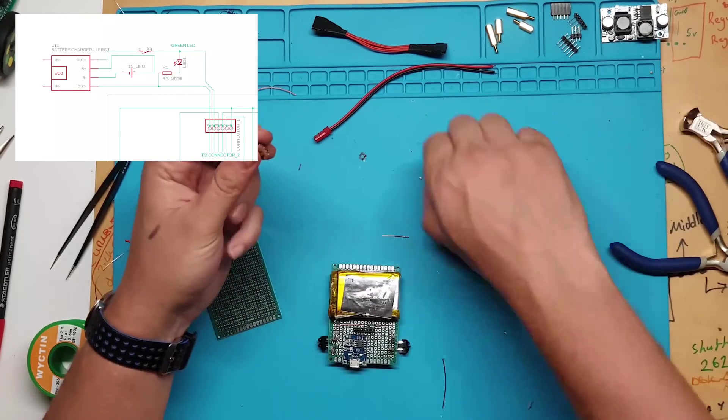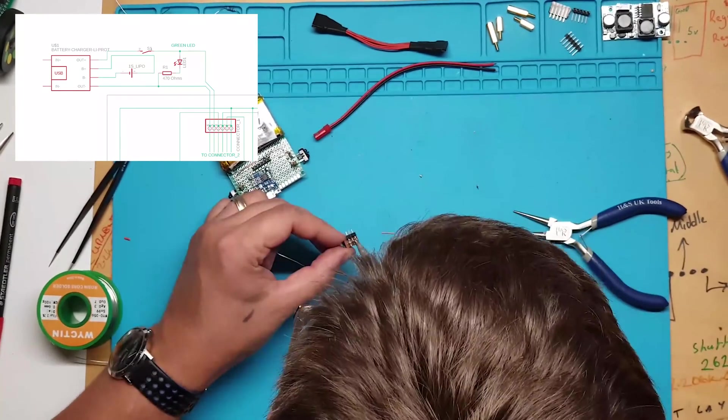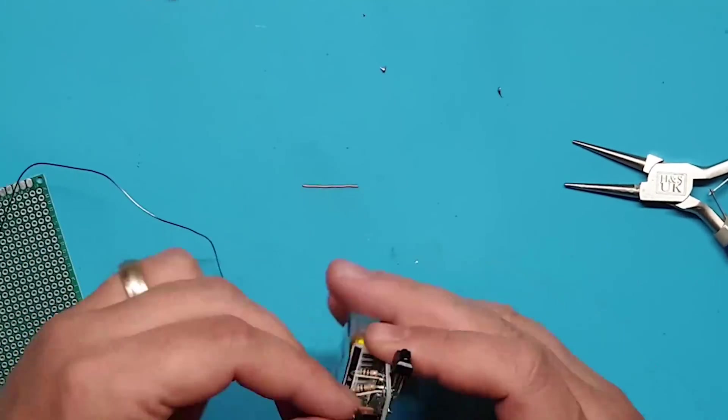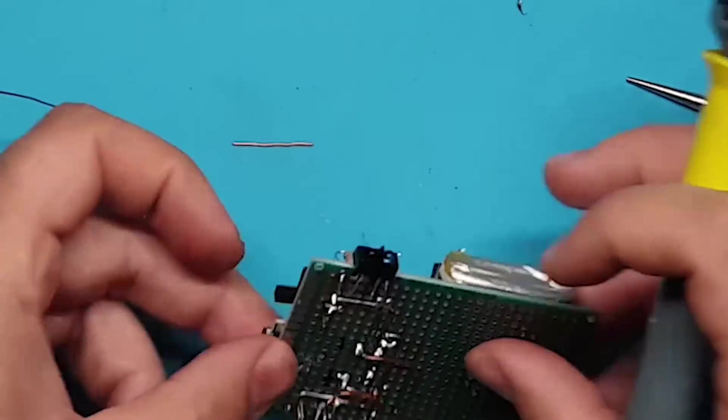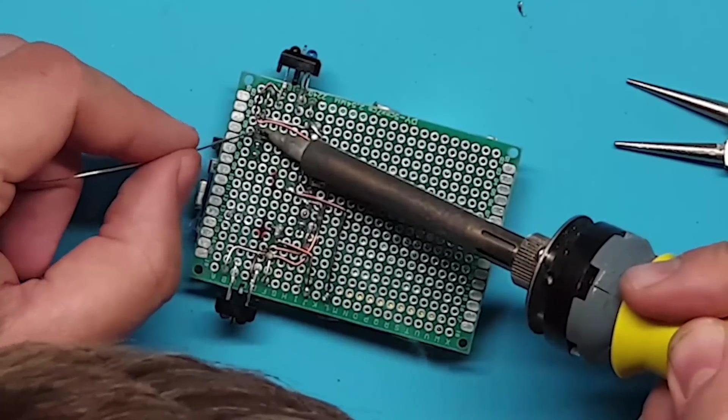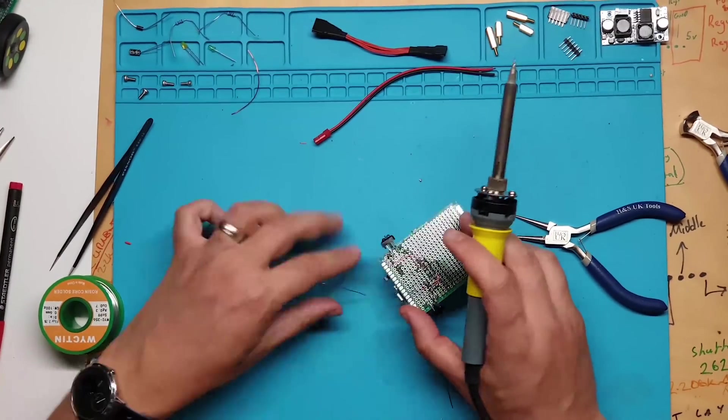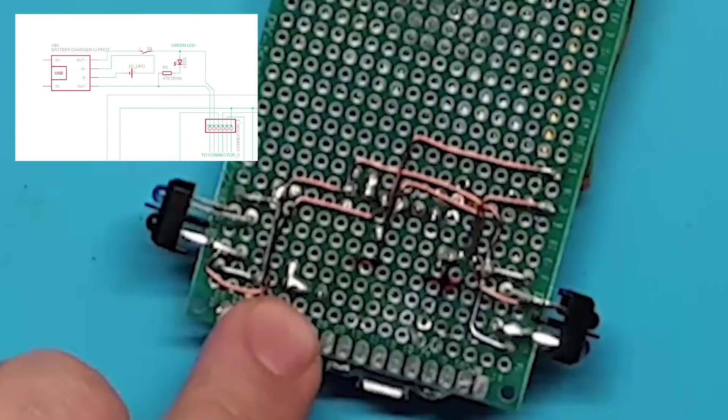Now we will add the switch. To secure the switch I soldered it onto some headers. I will then solder these headers onto the perf board. Now the switch has been added, can you see that I shorted 2 of the pins together.